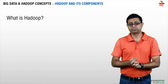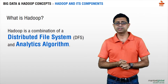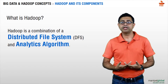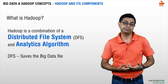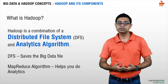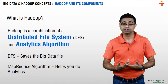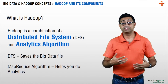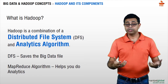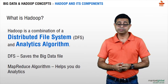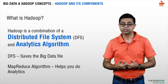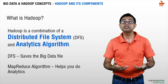Let's look at what Hadoop is. Simply put, Hadoop is a combination of a distributed file system and an analytics algorithm. The distributed file system helps you save the big data file, and the MapReduce algorithm helps you do analytics on top of it — all in a very quick time, on a set of commodity machines in a cluster. By commodity machine, I mean machines like what people like you and me use — everyday computers.